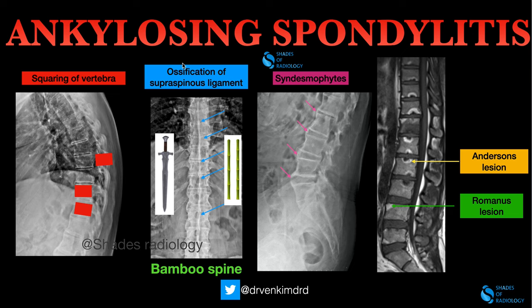The next finding is the ossification of the supraspinous ligament as well as the interspinous ligament. If you see, there is a thin ossification happening in the midline, joining the spinous processes — this is the ossification of the supraspinous or interspinous ligaments, which gives the appearance of a dagger sign.